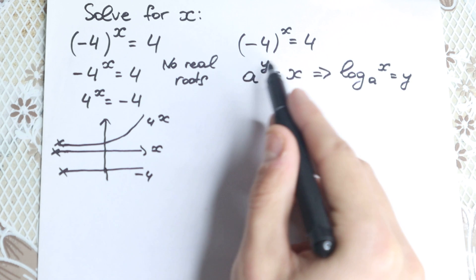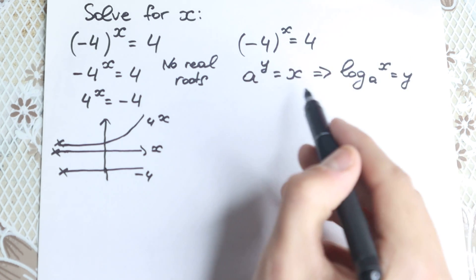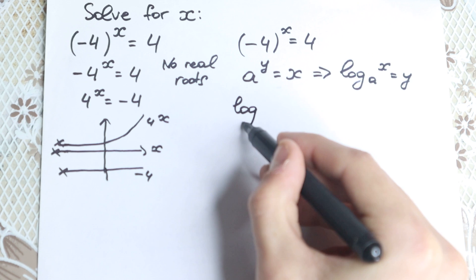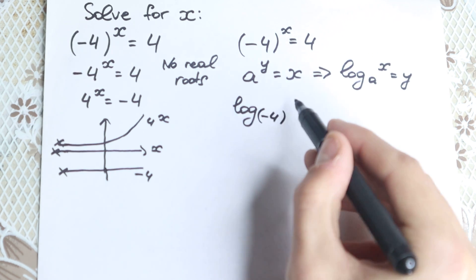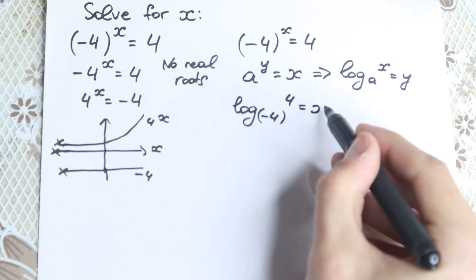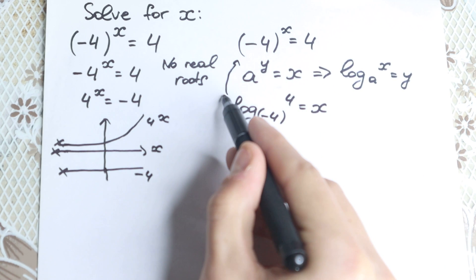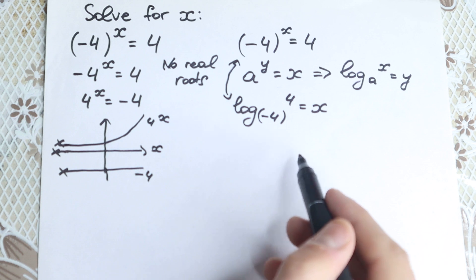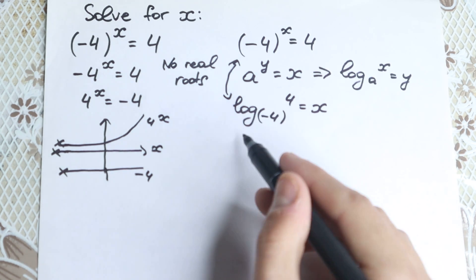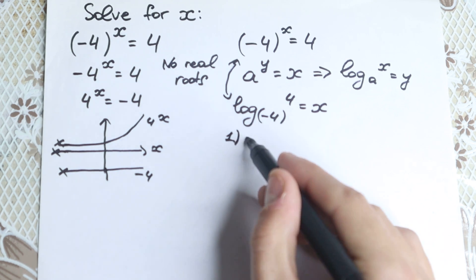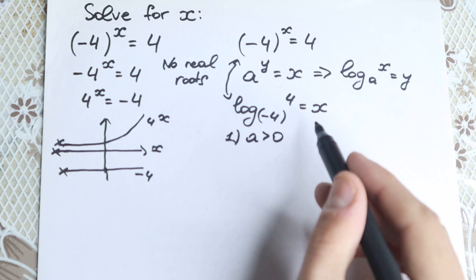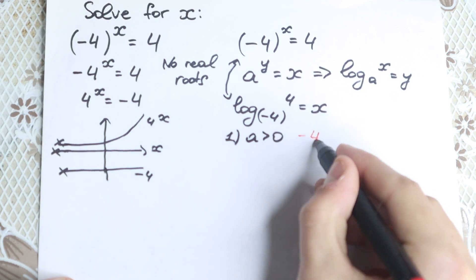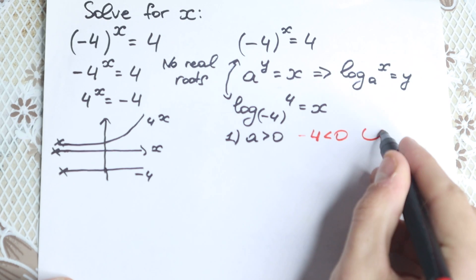We can rewrite this in logarithm form. Plugging in all the elements, we get: log base (minus 4) of 4 equals x. Now, everyone should know the three main logarithm rules. First, the base must be positive. In our case the base is minus 4, which is less than zero, so this rule does not work for us.